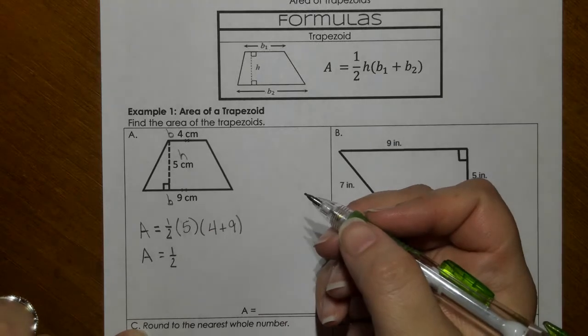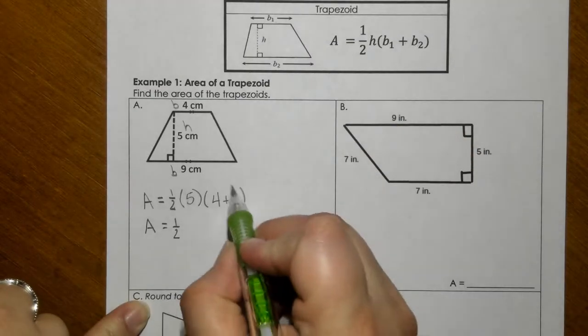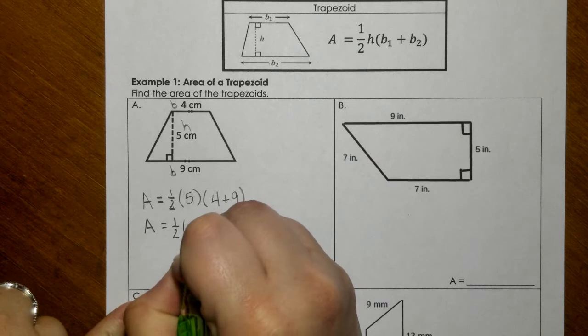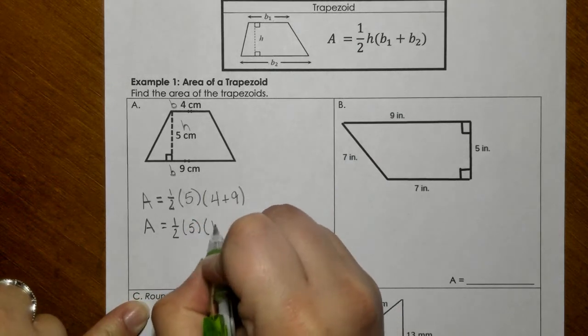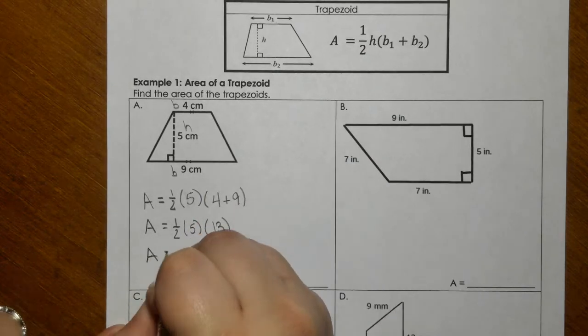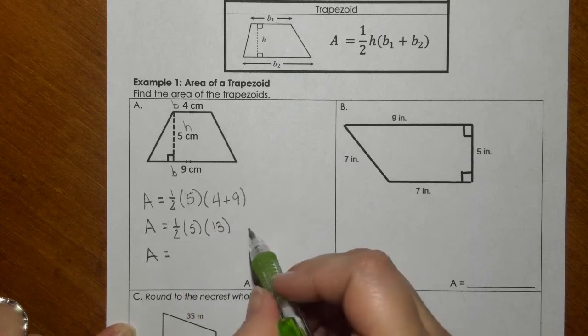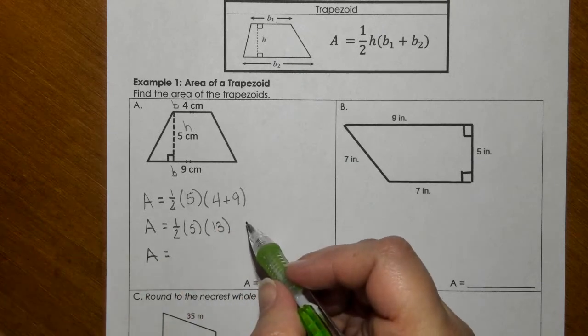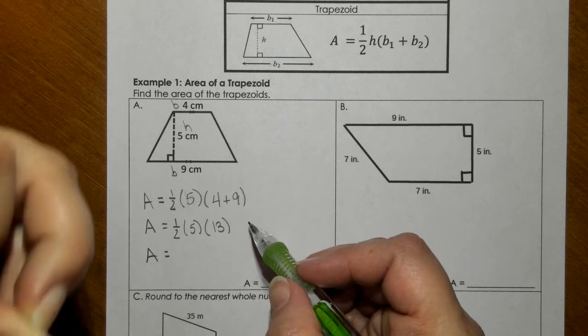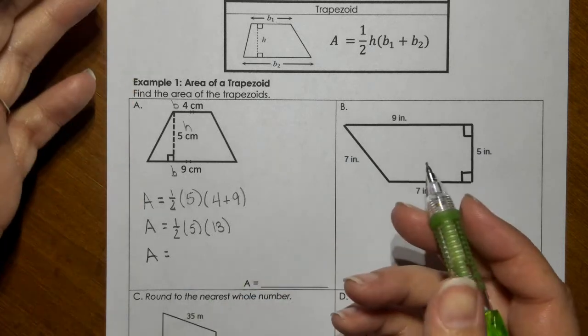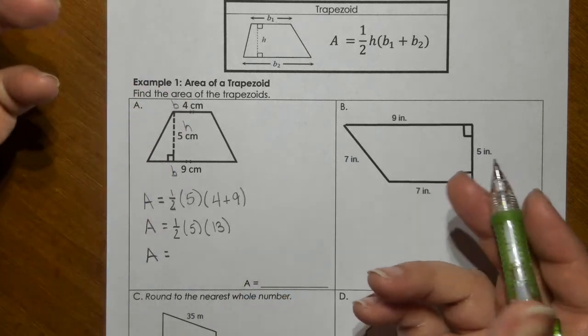Now, simplifying this using order of operations, you're going to want to add the parentheses first. So 9 and 4 would make 13. Now, at this point, everything here is multiplication. Multiplication is commutative, which means that you can multiply in any direction in a problem and you get the same answer.